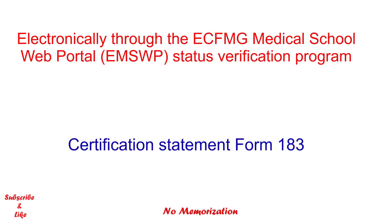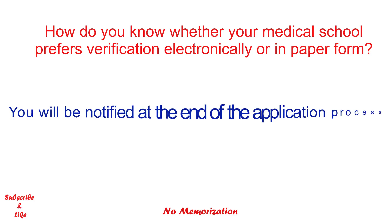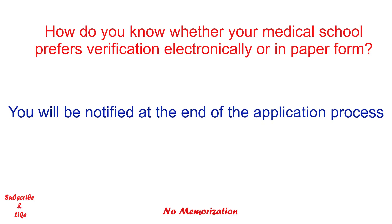That means the method of verification does not depend on ACFMG — it depends on your medical school. Now, how do you know whether your medical school prefers verification electronically or in paper form? Once you submit your online part of the application, you will be notified at the end of the application process. If your medical school completes status verification via paper form, you will be provided with the form at the end of the online application process, along with detailed instructions on how to complete and submit the form.